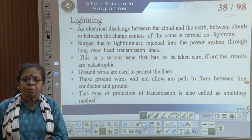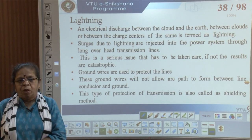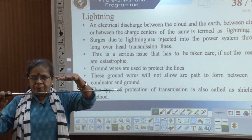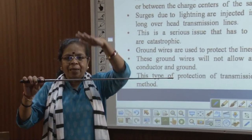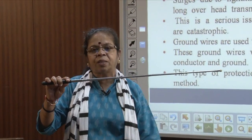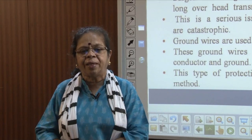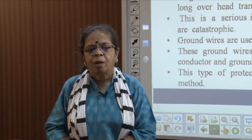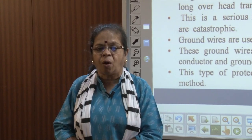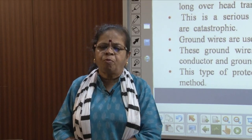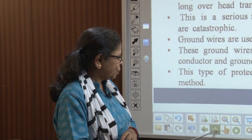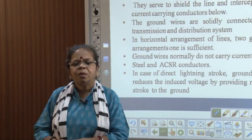Ground wires are provided to protect the lines. If I have a transmission line conductor, I will have a ground wire above it so that lightning strikes the ground wire instead. The ground wire is connected to ground, so the discharge is grounded and the lines are protected. These ground wires will not allow a path to form between the line conductor and the ground — this type of protection is called the shielding method.